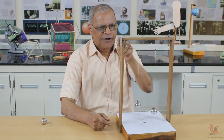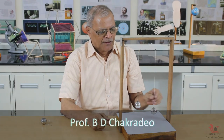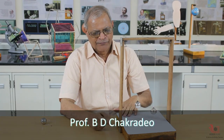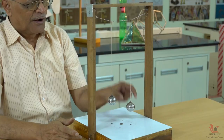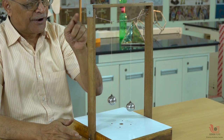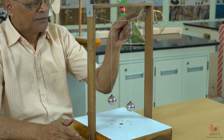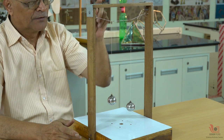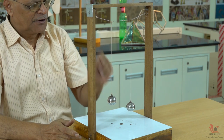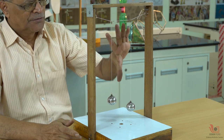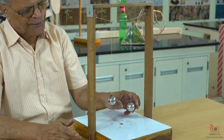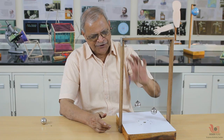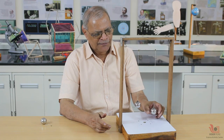This is a wooden frame and wooden base. This is a nylon thread. Two hooks are there — one pendulum and the other pendulum. The lengths are not equal: one is long and one is short comparatively.